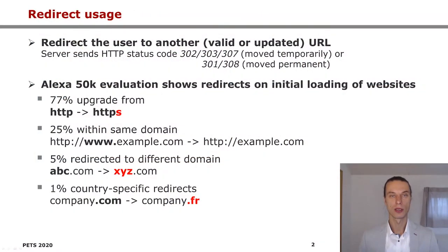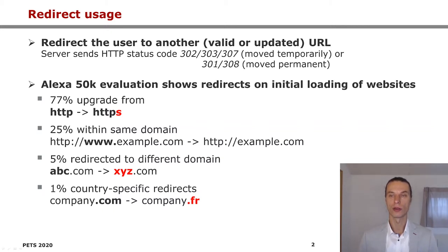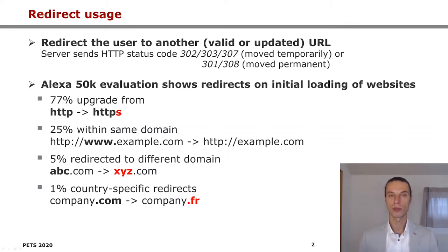First, some basics about redirects. The intended usage is to redirect the user to another valid or updated URL. Here, the server usually sends an HTTP status code for a temporary or permanent moved URL. In our evaluation of the Alexa 50k, we saw different behavior on the initial loading of websites. 77% upgraded from HTTP to a secured connection, and 25% redirected within the same domain, for example adding or removing a subdomain.